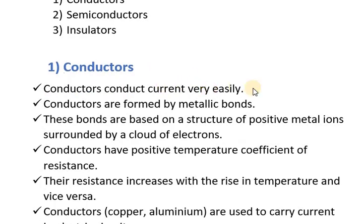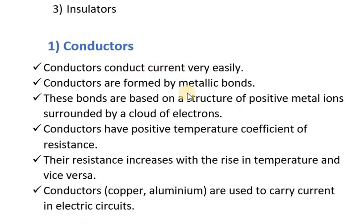First is conductors. Conductors conduct current very easily. There is minimum or very less opposition to flow of electric current or free electrons. So conductors conduct current very easily because opposition is very less. Conductors are formed by metallic bonds.